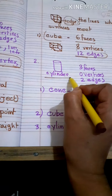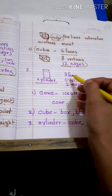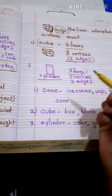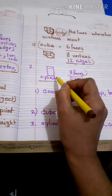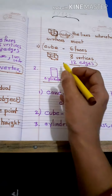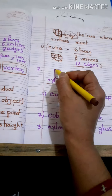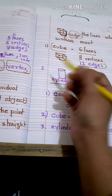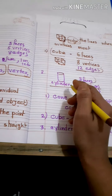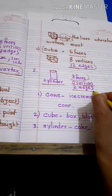Next one is cylinder. A cylinder is one of the 3D shapes. How many faces? Three faces. Zero vertices — that means no point is there, because the mouth of the cylinder is just like an oval shape. Two lines meet, so that's why there are two edges.